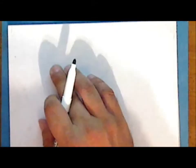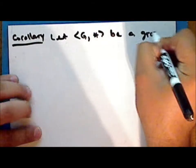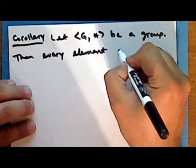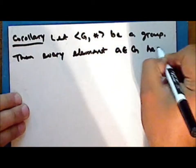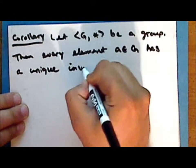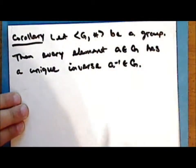Next, as a corollary of the theorem that we proved earlier, we will show that in a group every element has a unique inverse. So let the set G together with the binary operation star be a group. Then every element A in the underlying set G has a unique inverse, also in the underlying set.